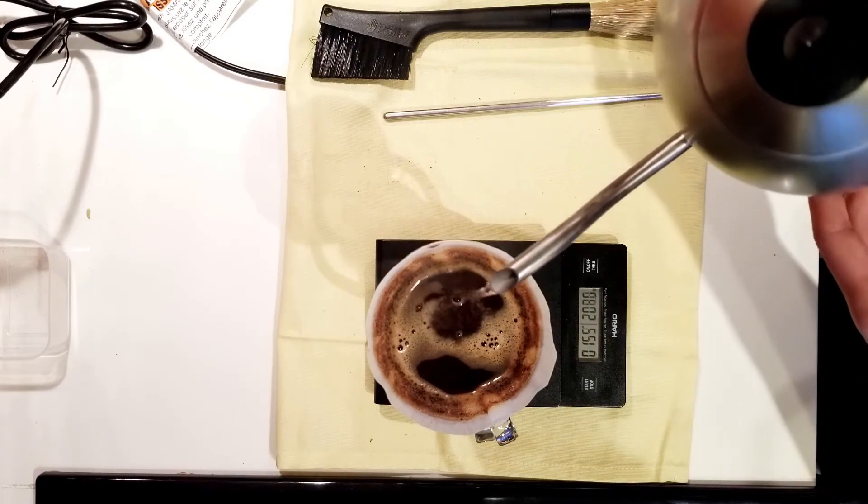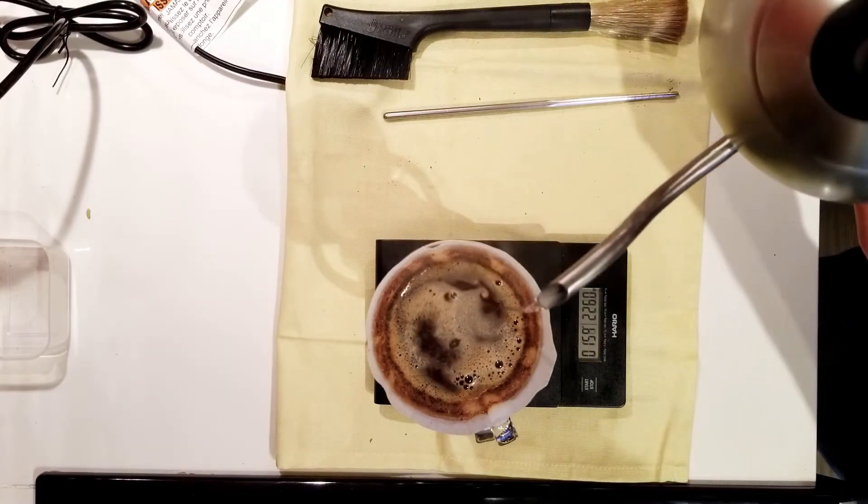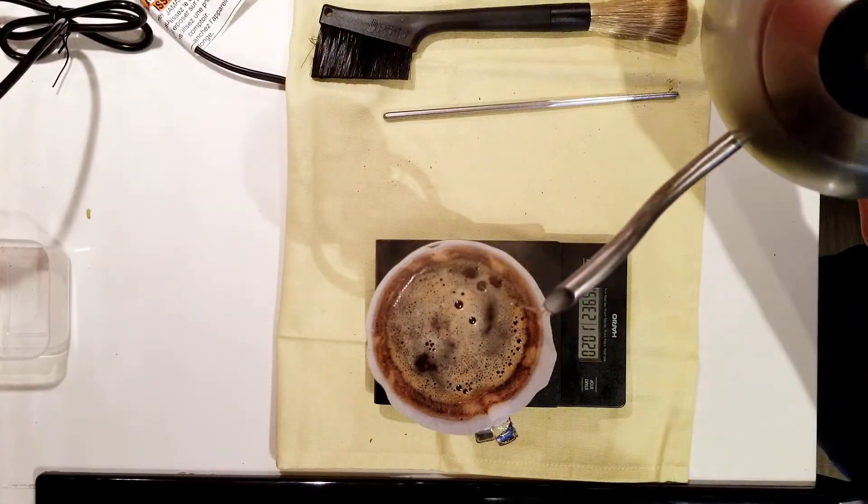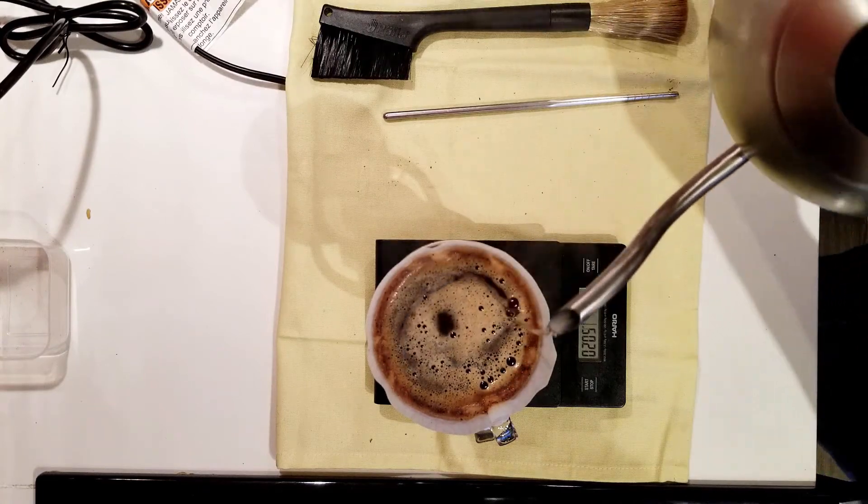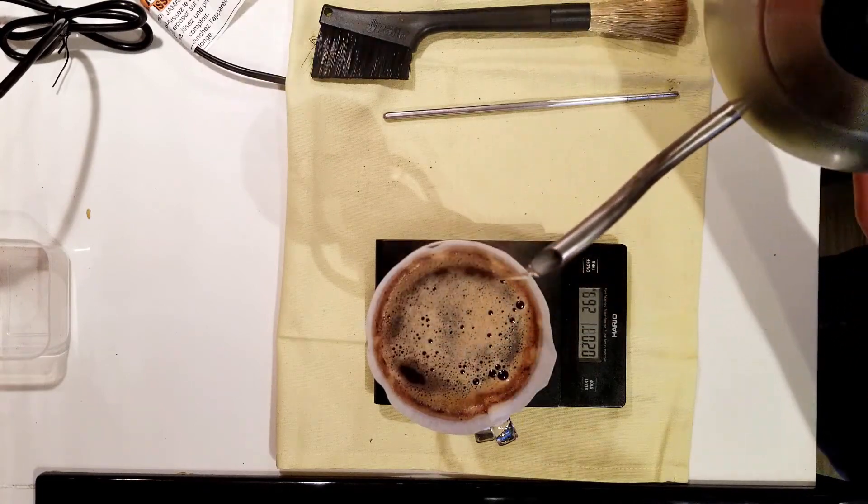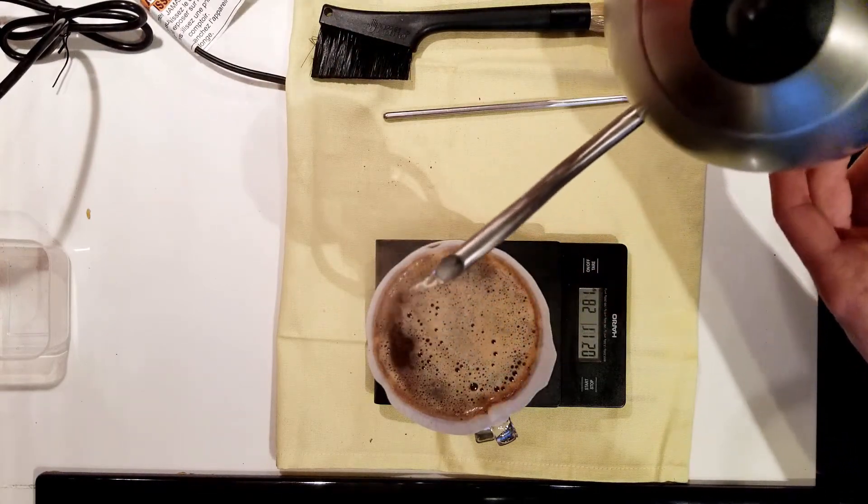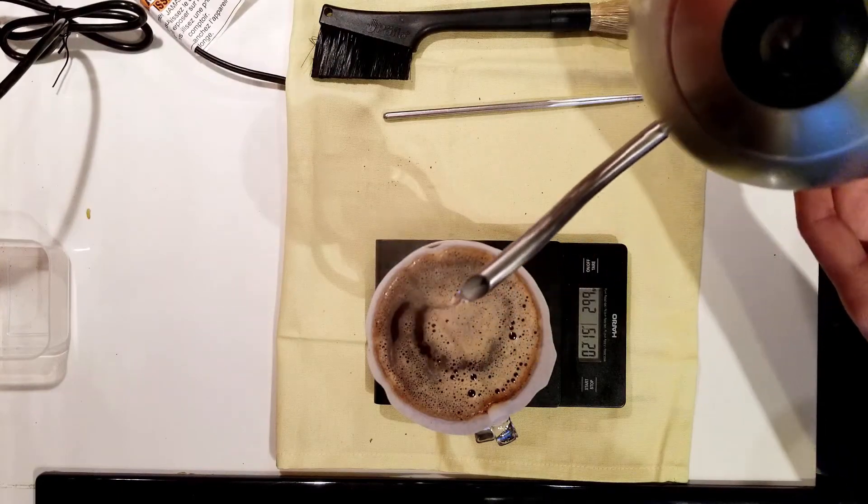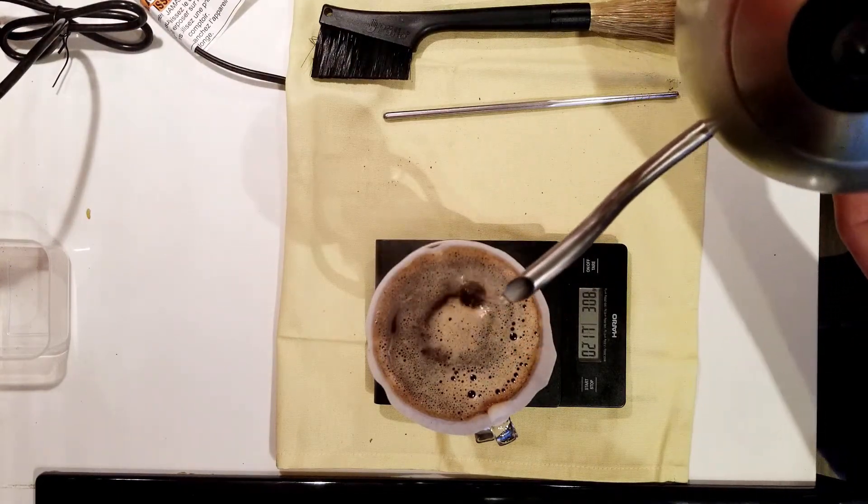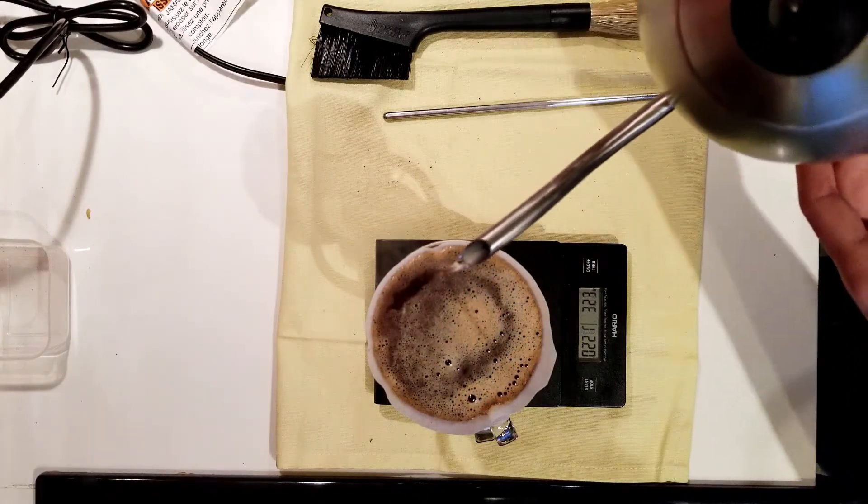Letting the coffee drain between pours is also a very interesting subject and without getting too much into the science just know that the idea is to let the most concentrated liquid drain out so that when we add fresh clean water we are able to increase the rate of extraction and pull even more from our coffee. But you don't let it drain entirely because the temperature will drop significantly if the water goes below the coffee bed.